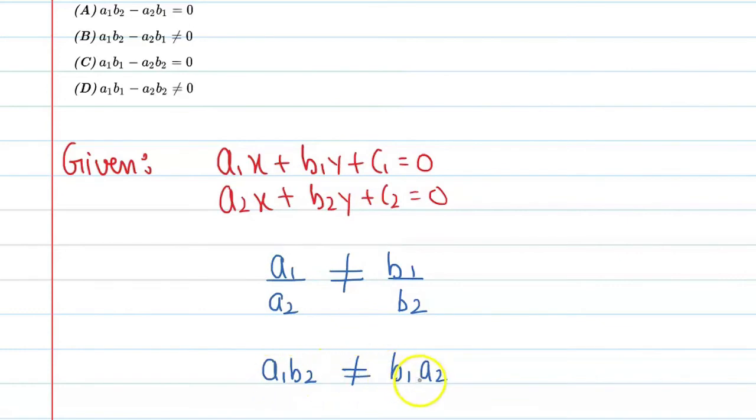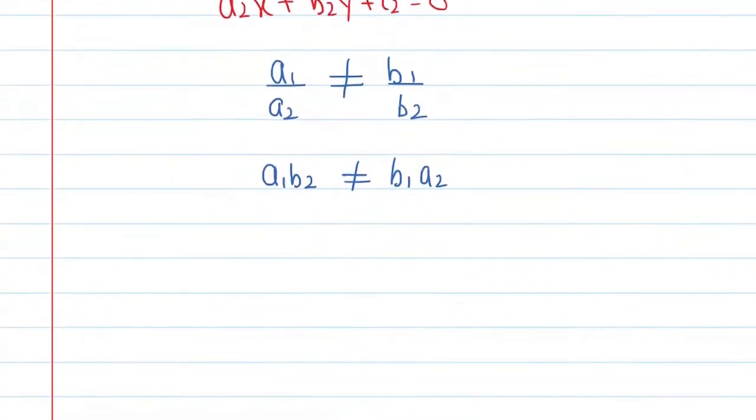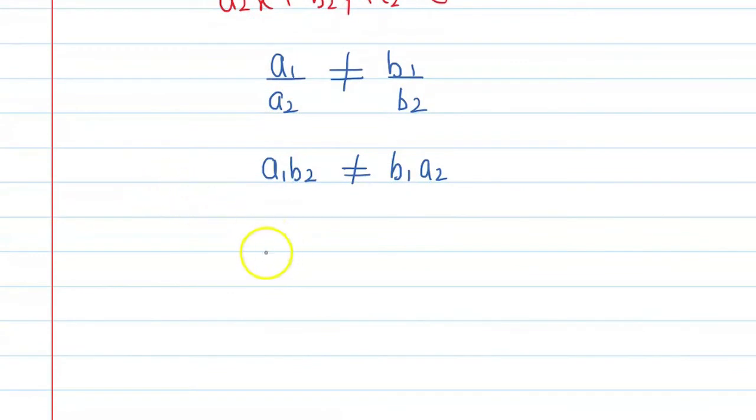All right, now if you take this term from the right-hand side to the left-hand side, you get a1 times b2 minus b1 times a2 is not equal to 0. All right.